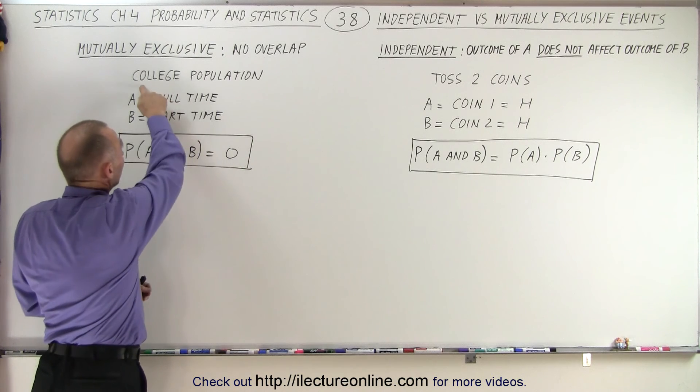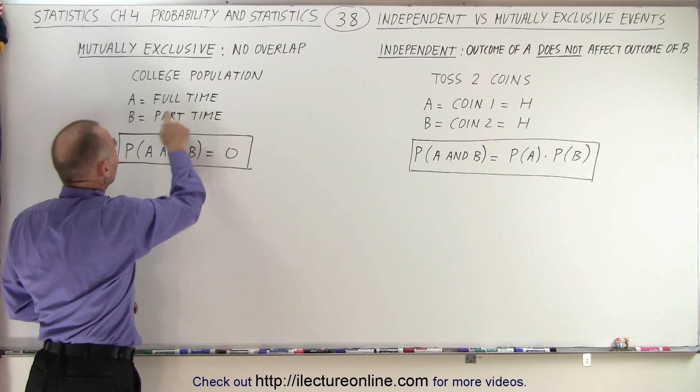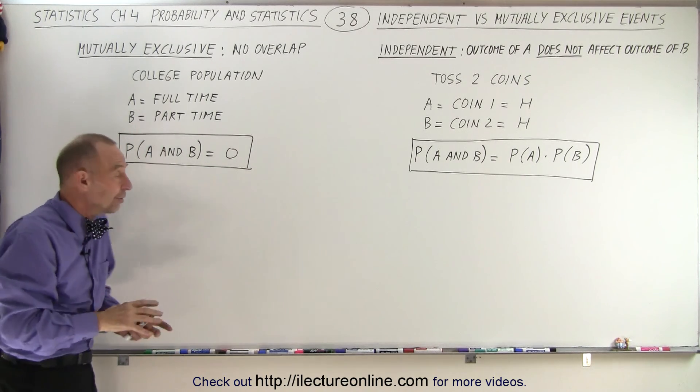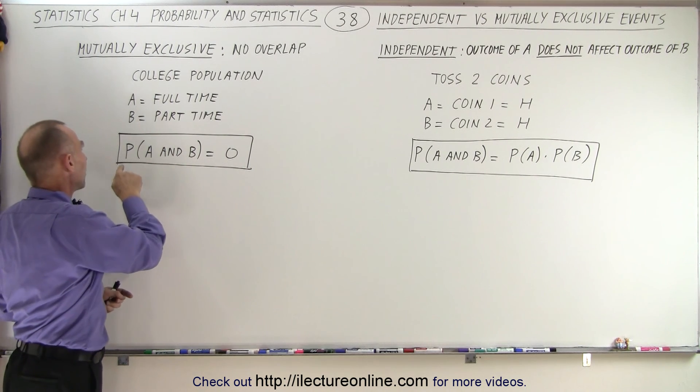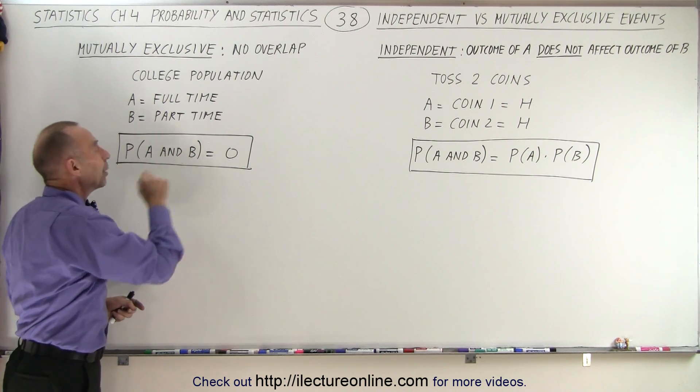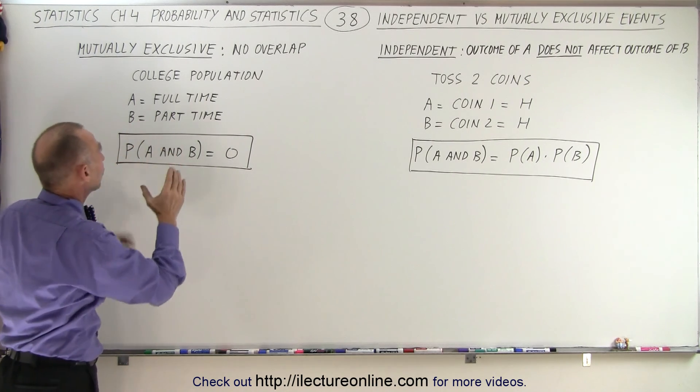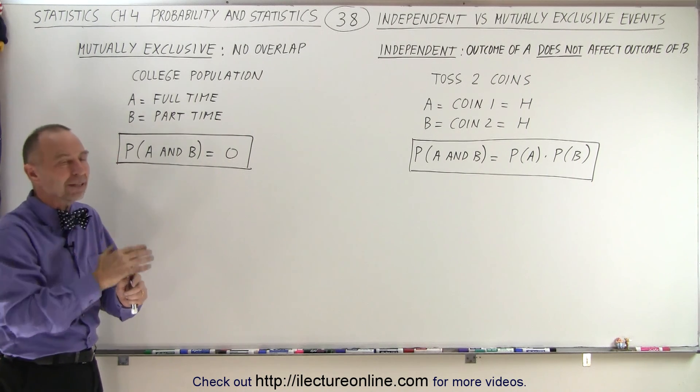For example, when we have a college population, if A is the event of full-time students and B is the event of part-time students, you cannot be a full-time student and a part-time student at the same time. So when we look for the probability of A and B, that will equal zero because they are mutually exclusive events. There's no overlap. You cannot have A and B at the same time.